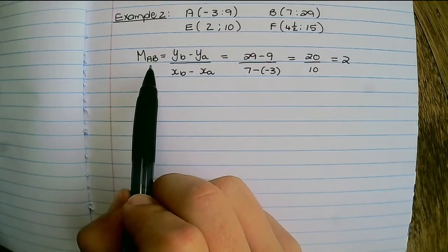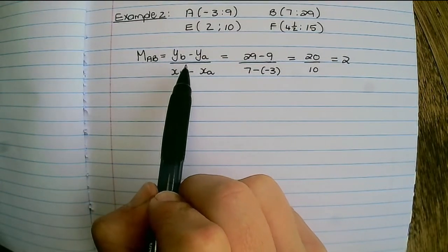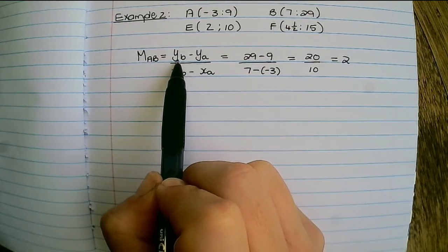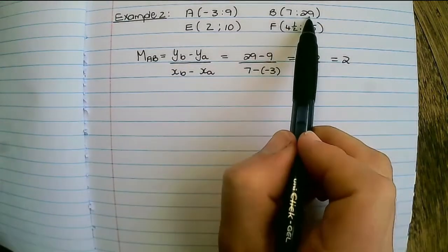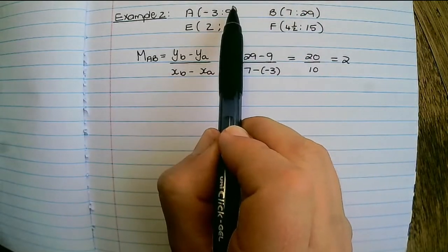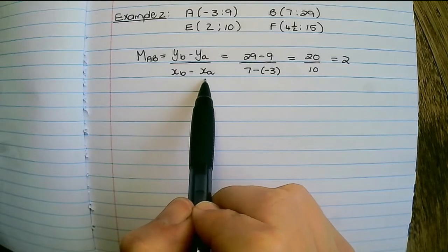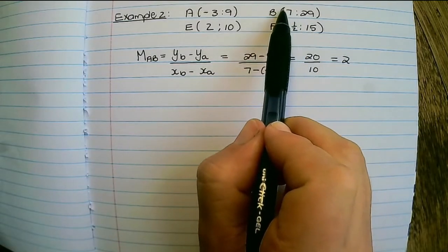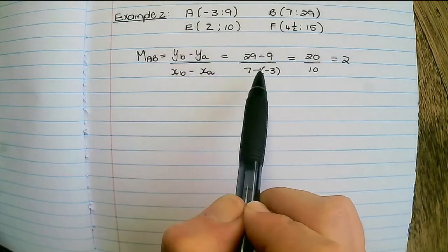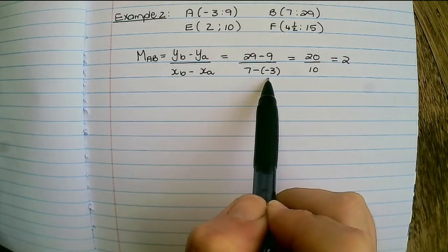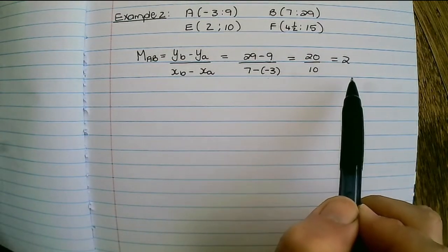So the gradient of AB is the same as the one we had before. So it's the y of B minus the y of A. So that's the y value of B. The y value of A is 9. The x of B minus the x value of A. So that's 7 minus minus 3, and we discussed that this becomes positive 10.